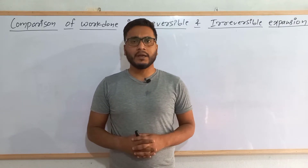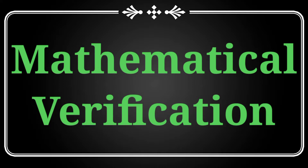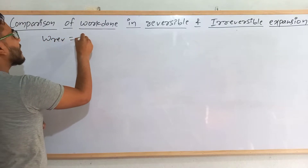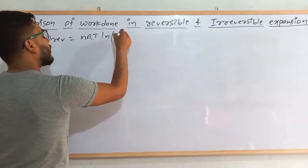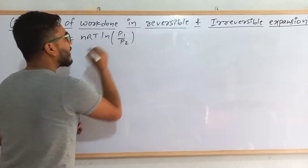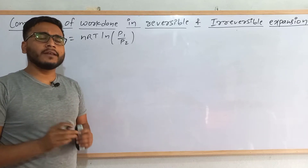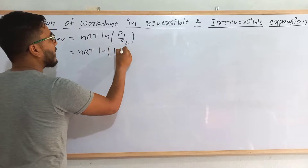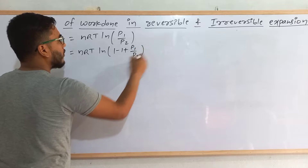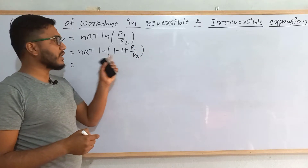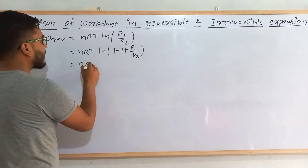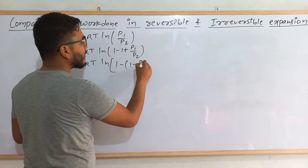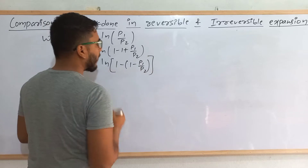We know that the mathematical form of work done in reversible process is nRT ln(p1/p2). I have already made a video about this — you can check the link in the description below. Now this form can be rearranged as nRT ln(1 − 1 + p1/p2). We have added and subtracted 1 to change it into a Maclaurin series. So it can be written as nRT ln(1 − (1 − p1/p2)). This is now in the form of a Maclaurin series.